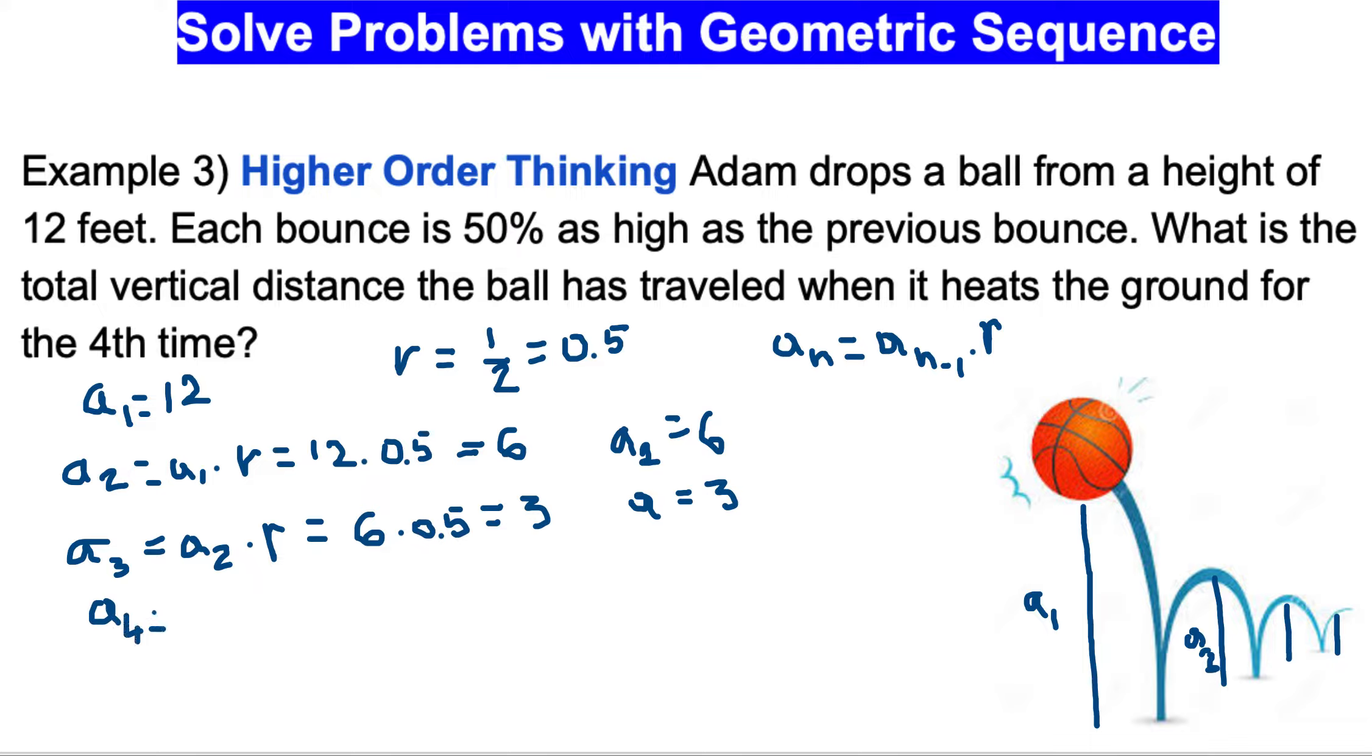a4 is equal to a3 times r, which is equal to 3 times 0.5, and this is equal to 1.5 feet.